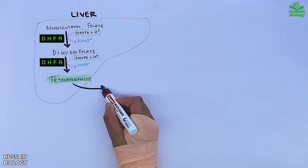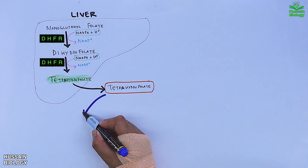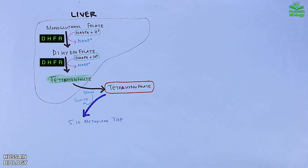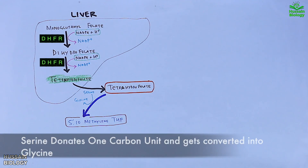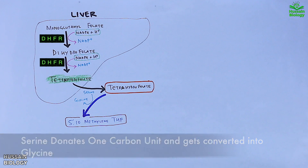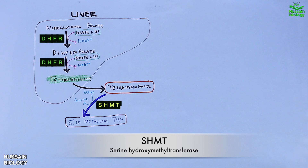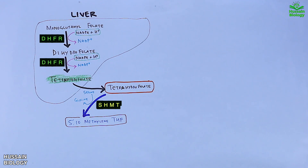From here, THF or tetrahydrofolate is converted into 5,10-methylene tetrahydrofolate, where one carbon unit is accepted by THF from serine, as shown in the diagram. This reaction is catalyzed by the enzyme serine hydroxymethyltransferase (SHMT). When serine gives off its one carbon unit, it is converted into glycine.